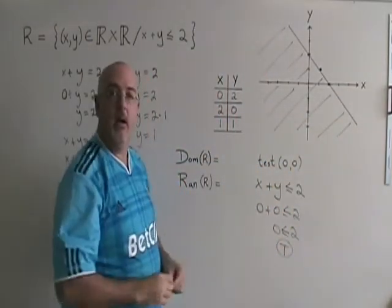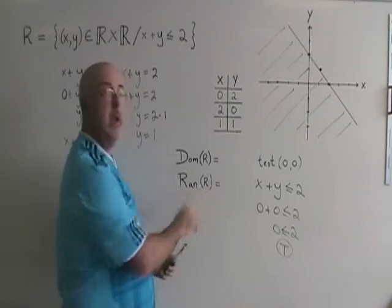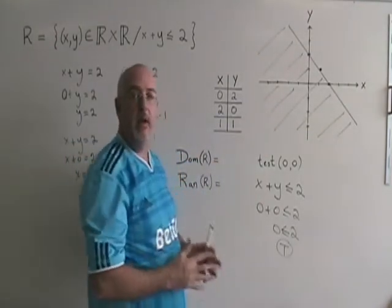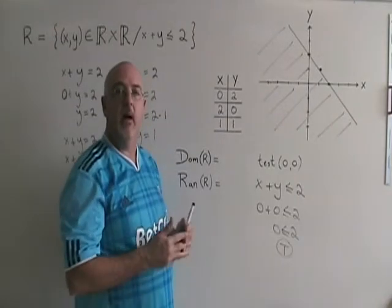I am finished graphing the line. All that's left to do is to give the domain and the range. For any oblique line with shading, my domain and range are always going to both be all real numbers.